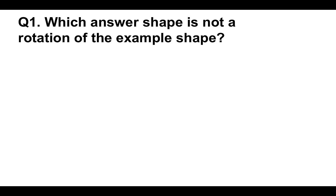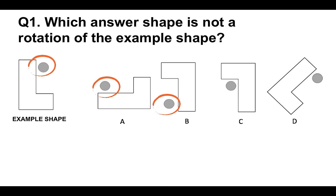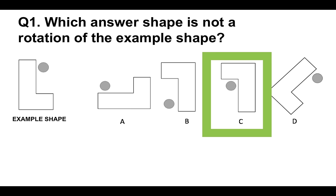Non-verbal reasoning test question number one: which answer shape is not a rotation of the example shape? That's the example shape on the left-hand side, and these are the answer shape options — A, B, C or D. How do we tackle this question? It's relatively simple. We focus on the circle there and decide which of them is still relevant when we rotate the example shape. It's the same as A, the same as B, the same as D. But if you look at C, that one is in a different place on the shape. Therefore, the correct answer is C.